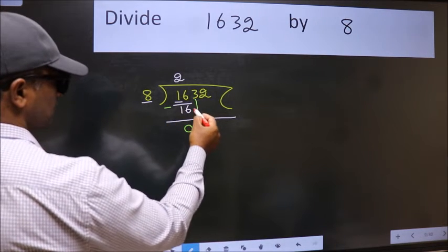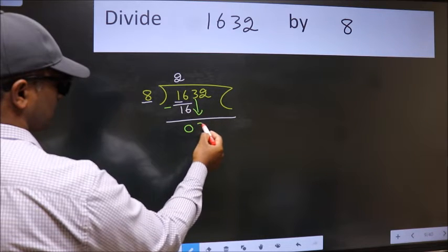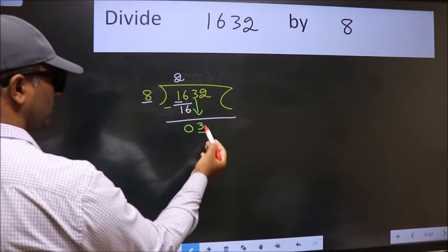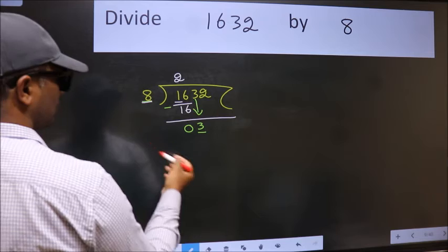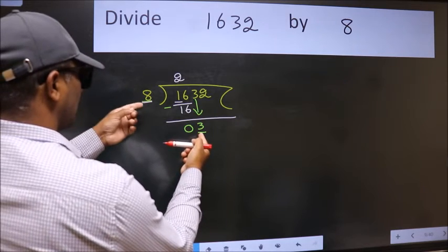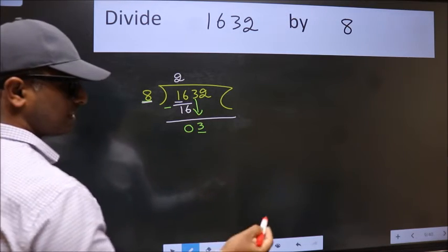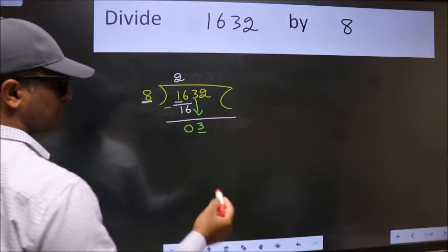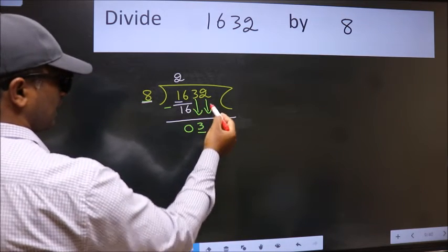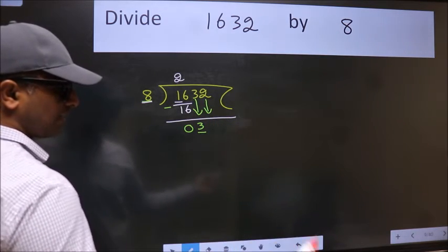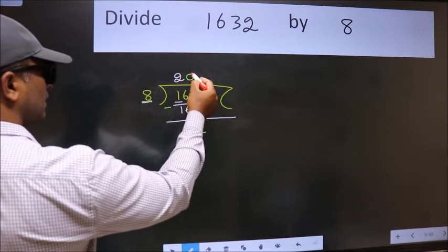After this, bring down the next number, so 3 down. Now here we have 3 and here 8. 3 is smaller than 8, so we should bring down the second number. And the rule to bring down the second number is put 0 here. Then only we can bring this number down.